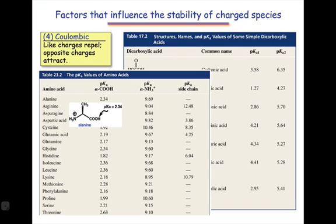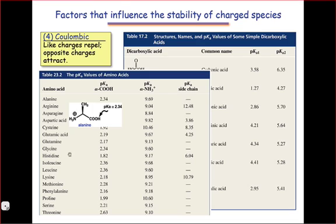The final factor influencing the stability of charged species is the Coulombic factor — basically, like charges repel and opposite charges attract. This means that a molecule with positive charge will be more likely to create a negative charge by deprotonation than a molecule without a positive charge. The example here is alanine, where the pKa of the carboxylic acid proton is substantially more acidic than we would expect from a conventional carboxylic acid.